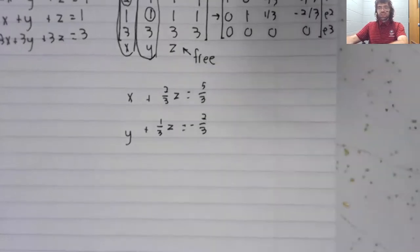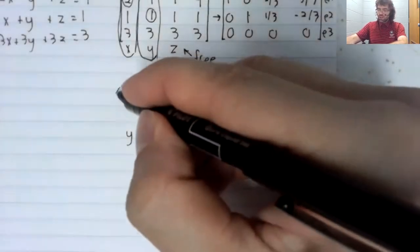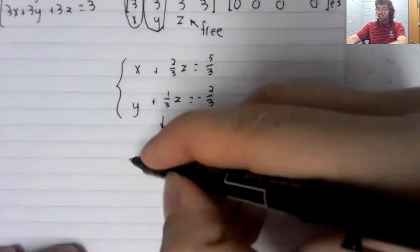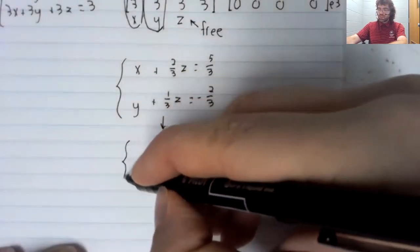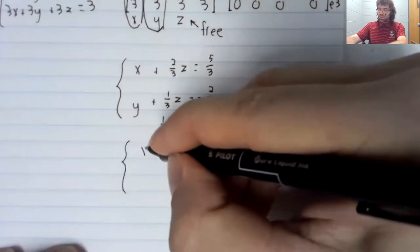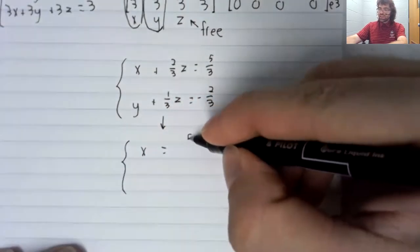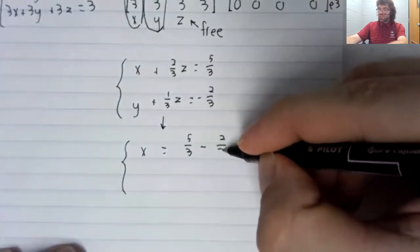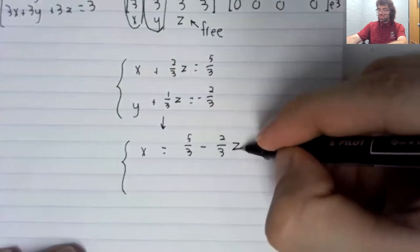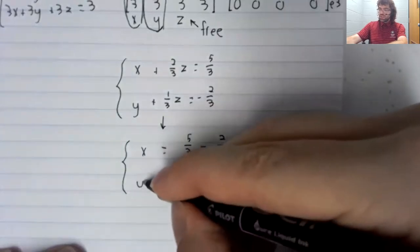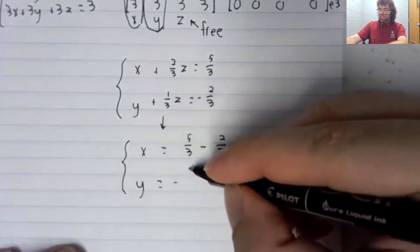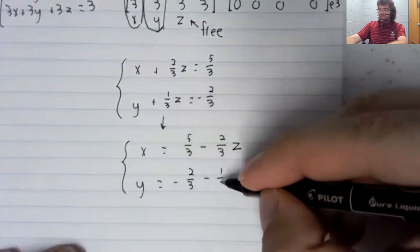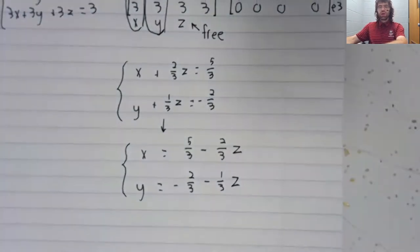Now we could take these equations and we could rewrite them so that the free variable z is on the right hand side of the equality.